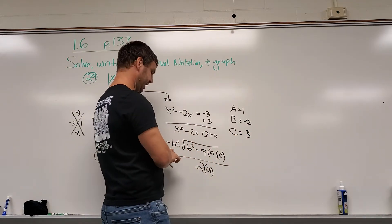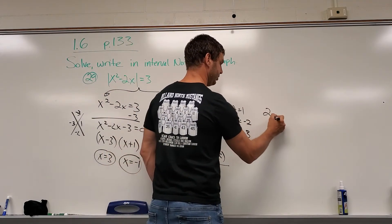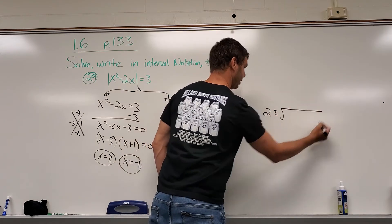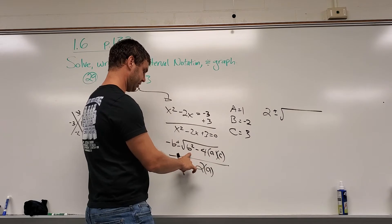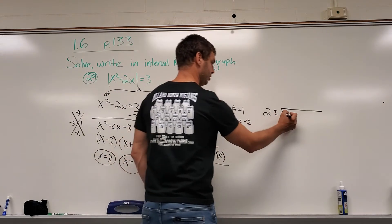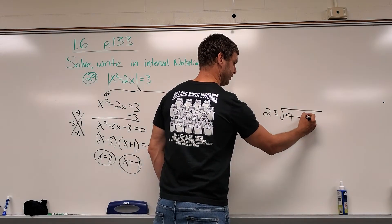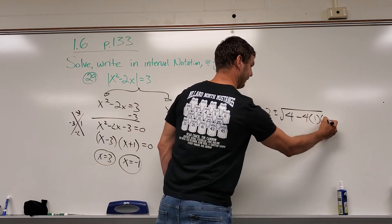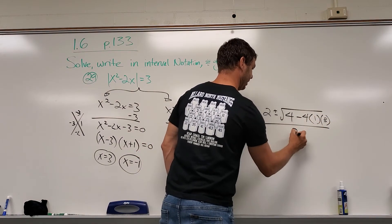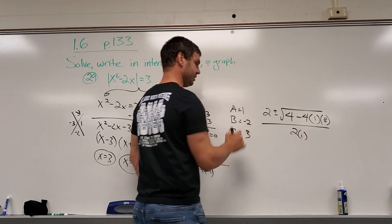Okay, so if I put this in here, negative b, the opposite of my b is going to be positive 2, plus or minus the square root, and then b squared is going to be 4 minus 4a is 1, c is 3. Okay, and that's all divided by 2 times a, or 2 times 1.